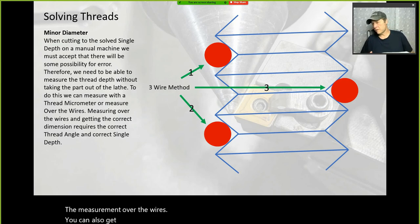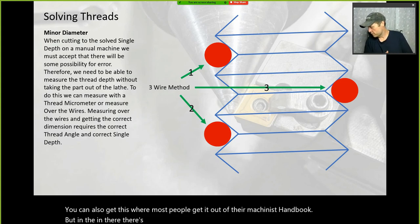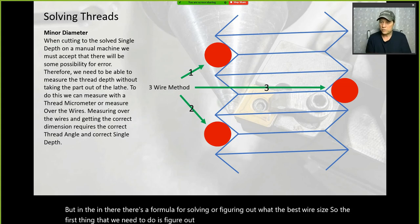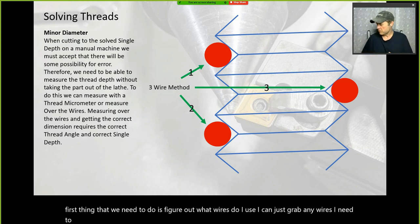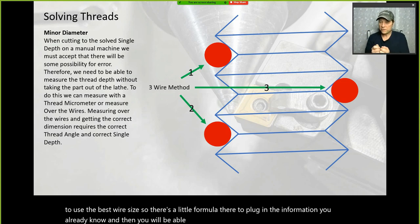The first thing is to figure out what wires to use — you can't just grab any wires, you need the best wire size. There's a formula where you plug in the information you already know and solve for the best wire size. Then the second part is to find the measurement over the wire.